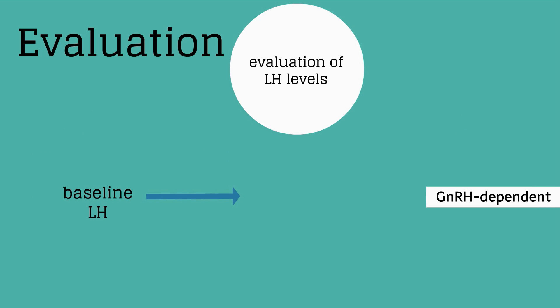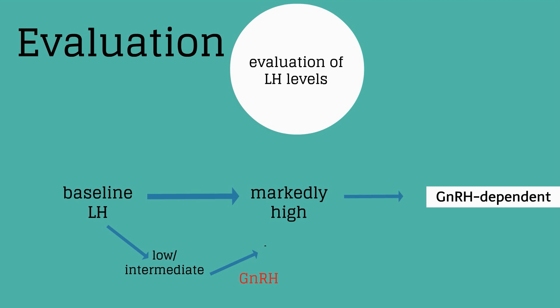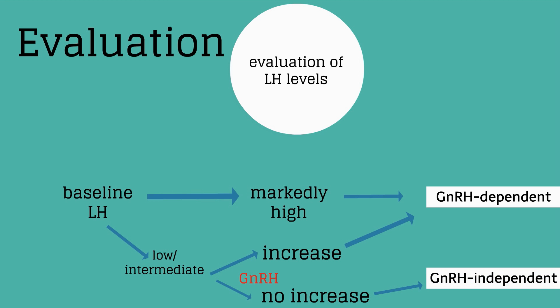The next step is physical examination with pubertal staging and radiographic evaluation of bone age. Then check a serum LH level: if the baseline LH is markedly high, a diagnosis of GnRH-dependent precocious puberty can be made, as elevated LH indicates the HPO axis is active. If baseline LH is lower or intermediate, administer a GnRH agonist — if LH increases, this confirms a GnRH-dependent etiology; if there is no increase, a GnRH-independent cause is indicated.